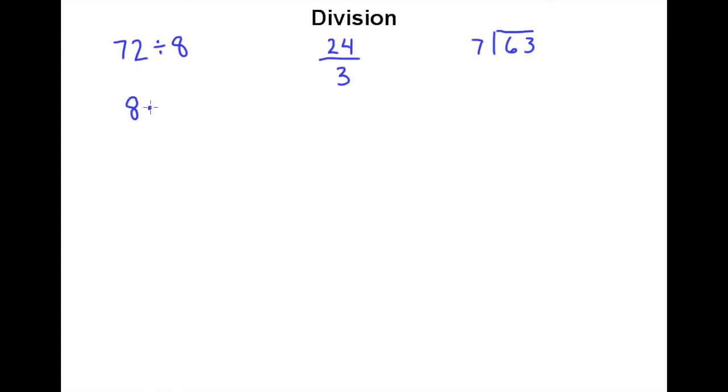8 times what number would actually give me 72? And so hopefully from your multiplication facts you already know the answer to this question. The answer to this question is of course 9 because 8 times 9 is 72. So the answer here is 9.